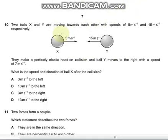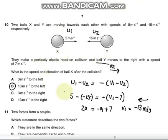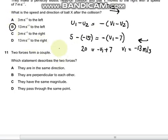Question 10 says what is the speed and direction of ball X after the collision. Just applying a perfectly elastic collision equation, we get v1 to be to the left-hand side with a speed of 13 meters per second. Question 11 says that two forces form a couple. Which statement describes the two forces?